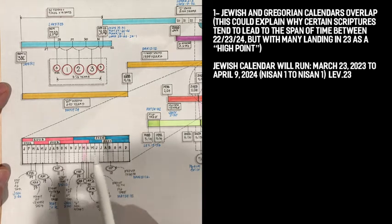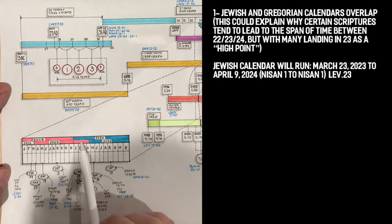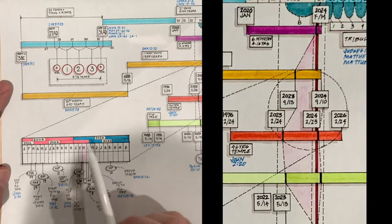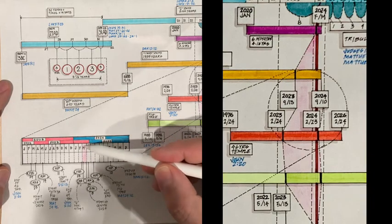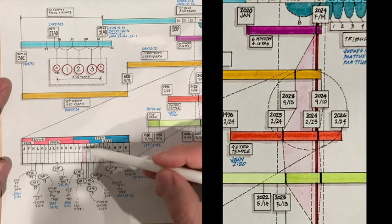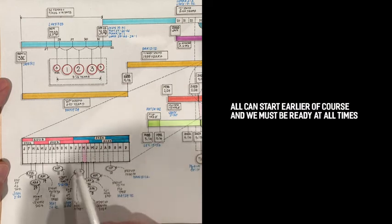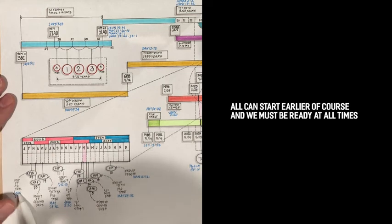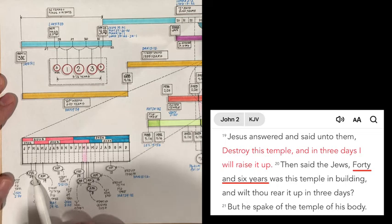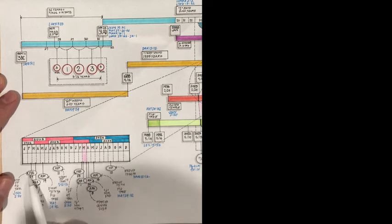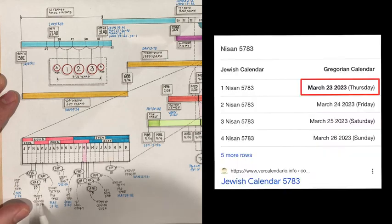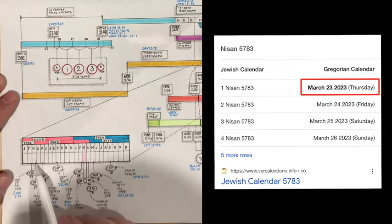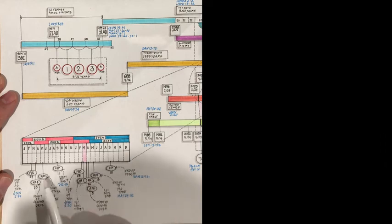So let's try to summarize this. It is a very high chance that the rapture and tribulation will all start within this year 23 and beginning of 24. Why? First of all, because we have this overlap of the Jewish calendar, which will start in March this year, March 23, and in April of next year, April 8. So you can see there's an overlap in the first few years, 24, where we have both 23 Jewish and 24 Gregorian happening at the same time. That means all of these scriptures we've been looking at, which point to 22 to 23 and sometimes 23 to 24.